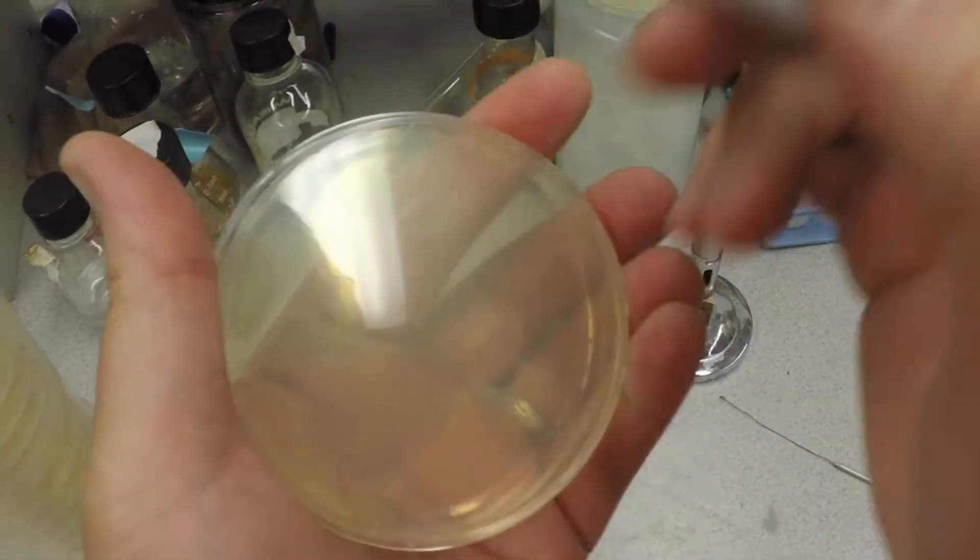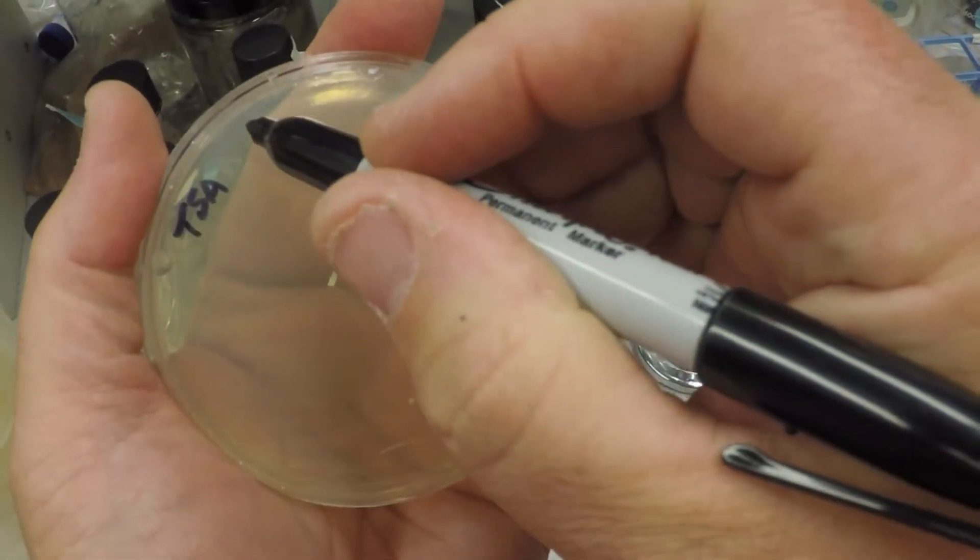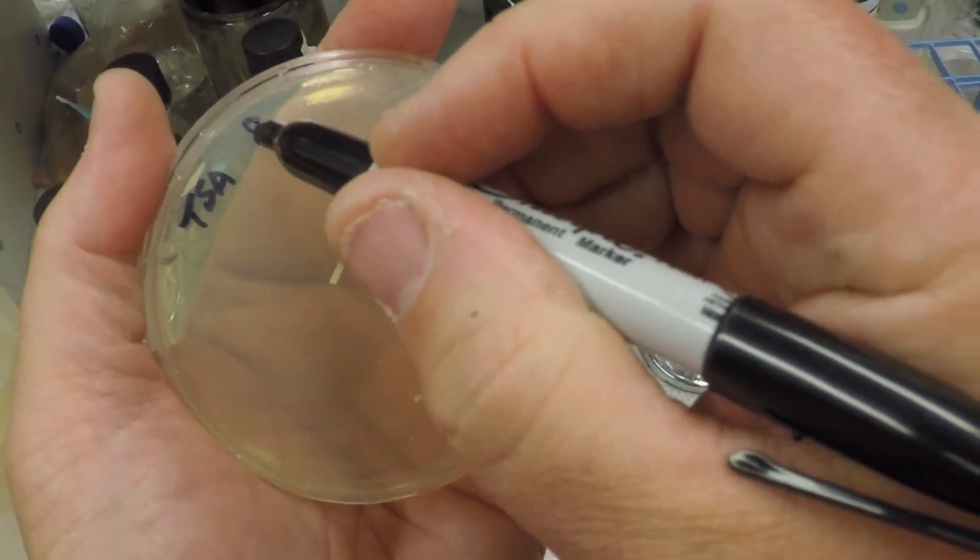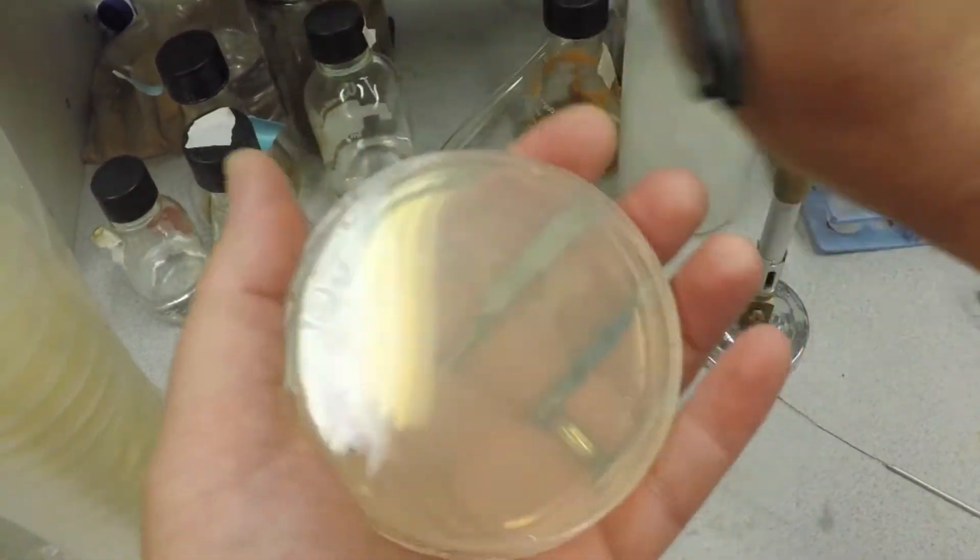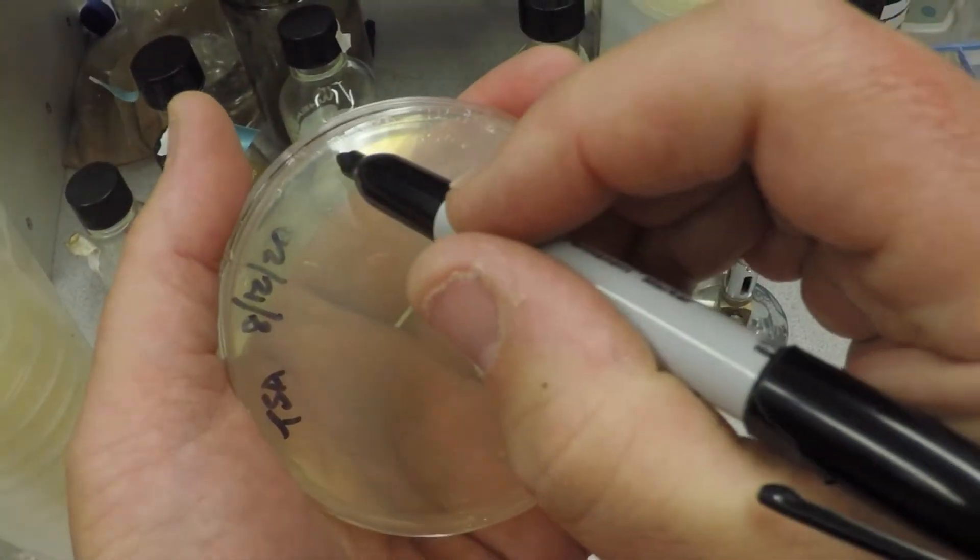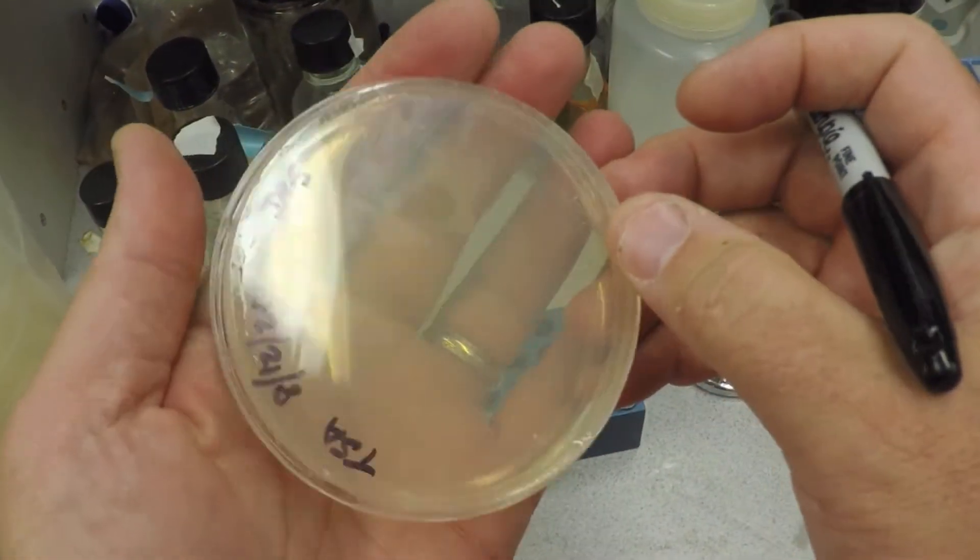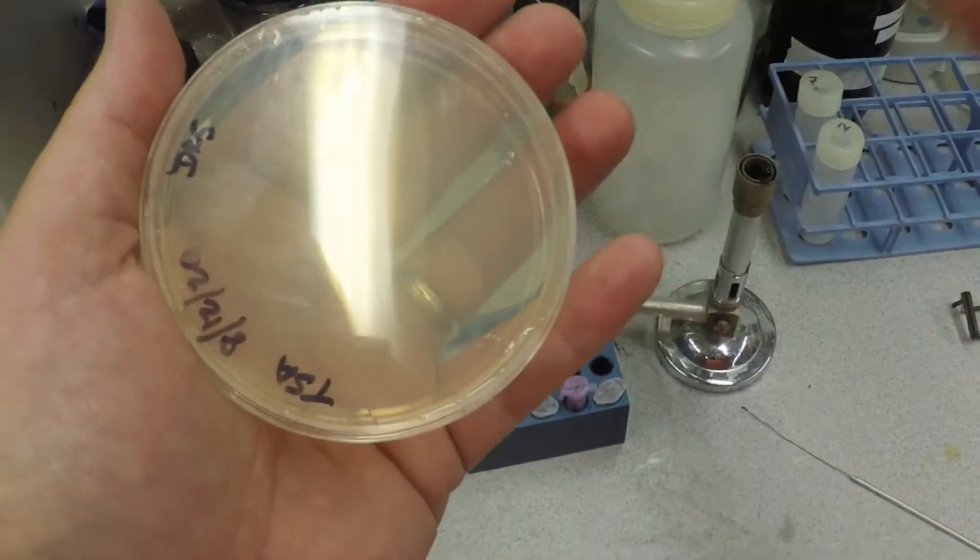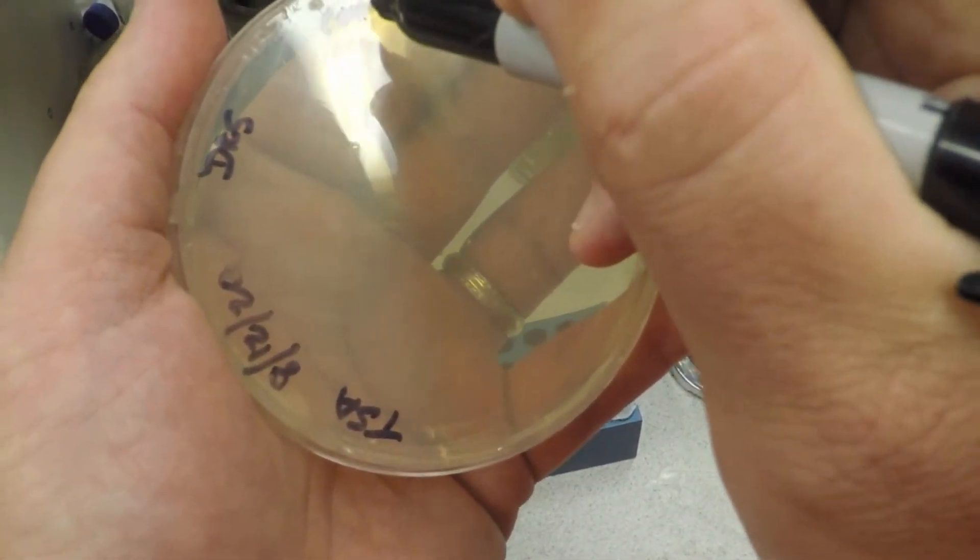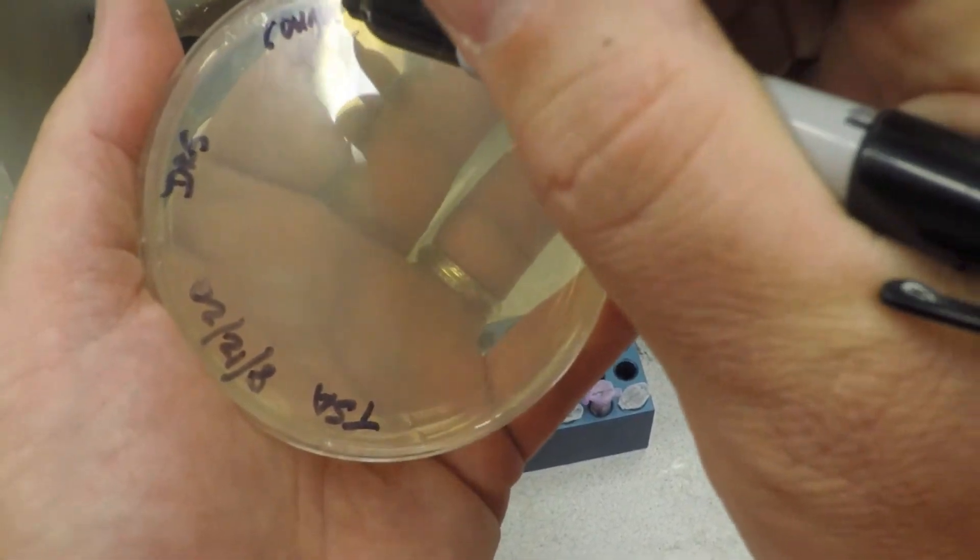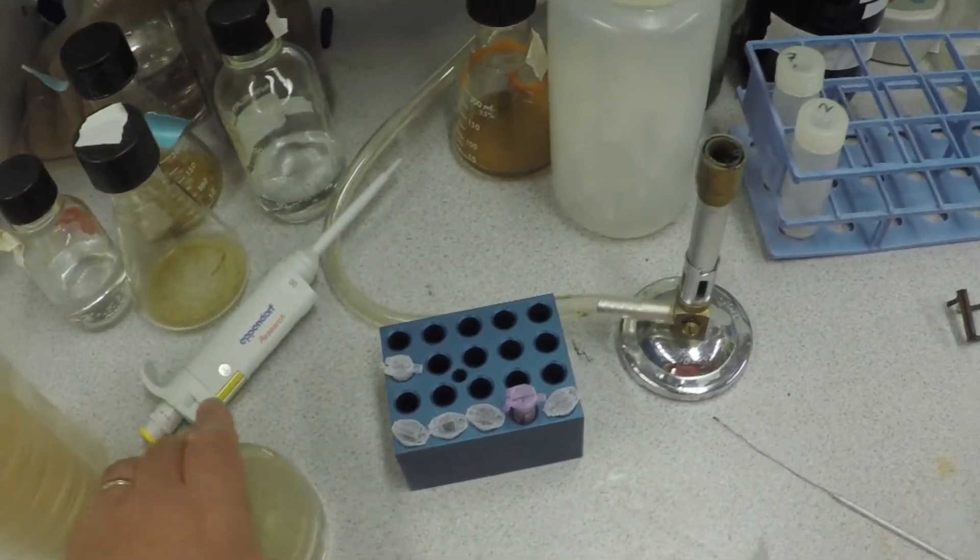When you take a sample, you label it. You always put down the type of media, tryptic soy agar. You put on the date, today is 8/12/20. You put down who's doing it so you can recognize your plate later, so I'm DRS. And then you put down what it is. This is cough minus mask.